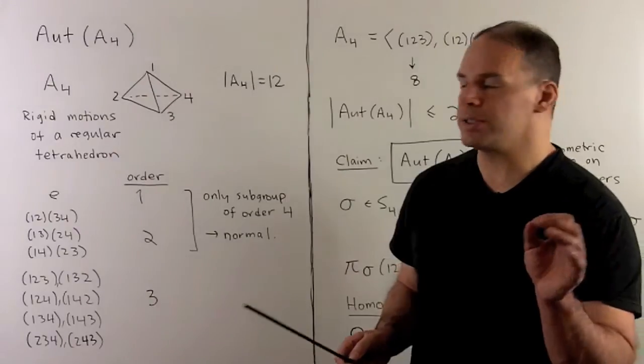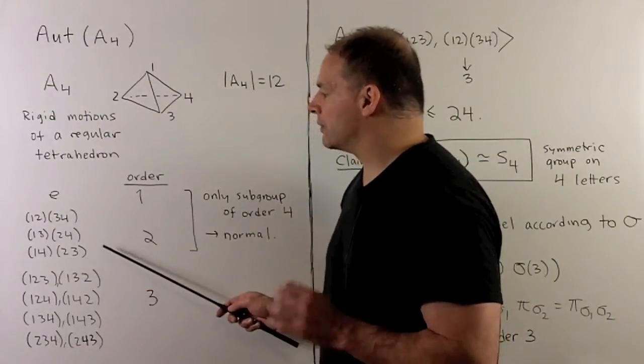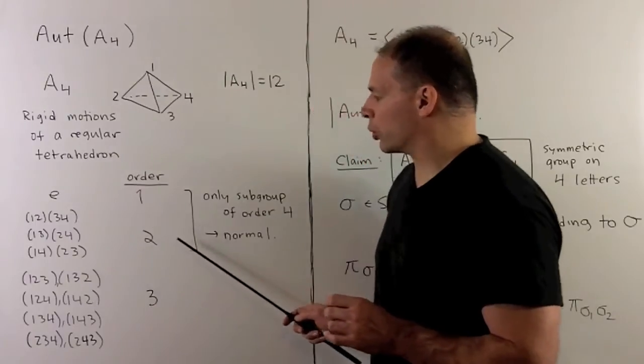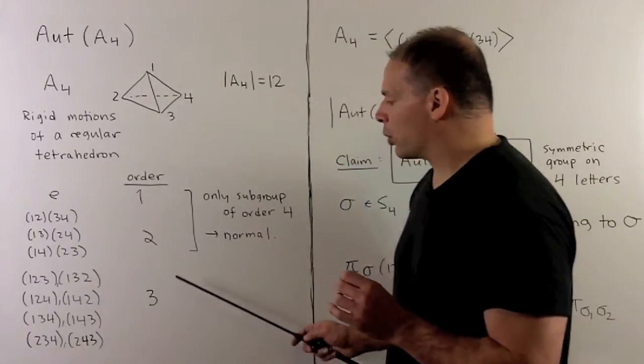If we list the elements, we have the identity element, three products of disjoint two cycles with order two, and eight three cycles which have order three.